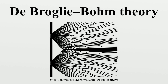The double-slit experiment is an illustration of wave-particle duality. In it, a beam of particles travels through a barrier that has two slits. If one puts a detector screen on the side beyond the barrier, the pattern of detected particles shows interference fringes characteristic of waves arriving at the screen from two sources. However, the interference pattern is made up of individual dots corresponding to particles that had arrived on the screen. The system seems to exhibit the behavior of both waves and particles.